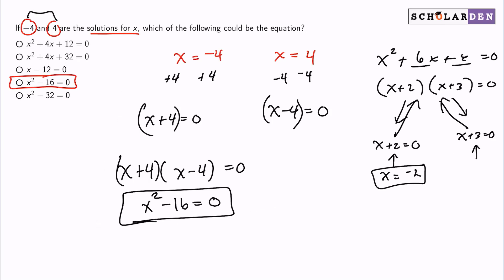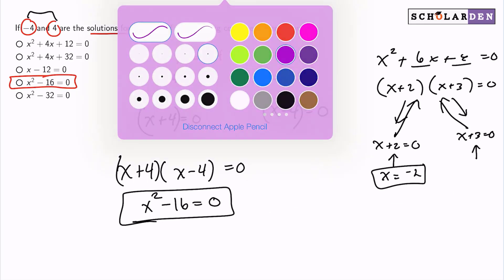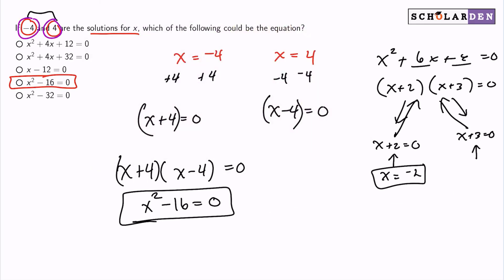And then the desperation technique would be to just go ahead and plug in negative 4 and positive 4 into all of your answer choices and see which one works.